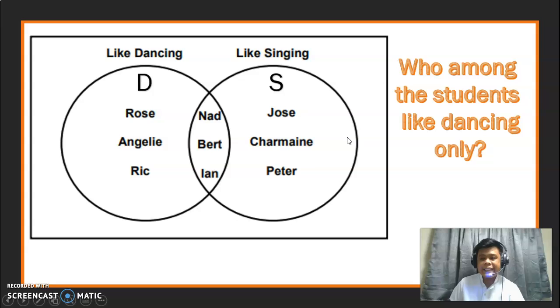Who among the students like dancing only? Sino daw dito ang gusto yung pagsasayaw lang? To solve or to answer this question, let us look at set D. Eto yung buong set D. Napapansin natin, meron tayong six students. Pero, sabi sa problem, sino daw yung mga students na ang gusto yung dancing lang? Eto ko si Nad, Bert at Ian kasi, kasalan rin siya dito sa may set ng singing. Hindi sila kasale sa inilista natin elements.